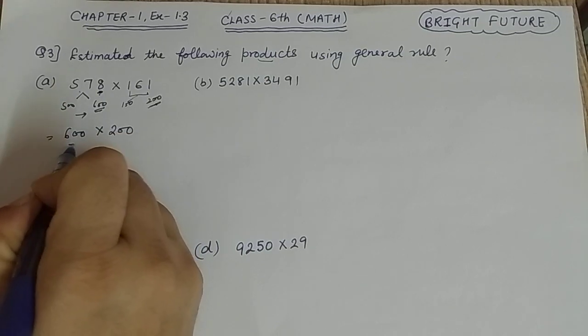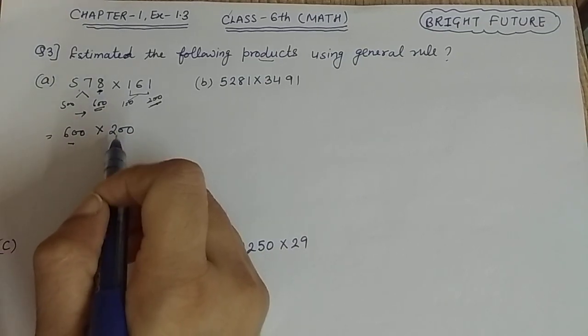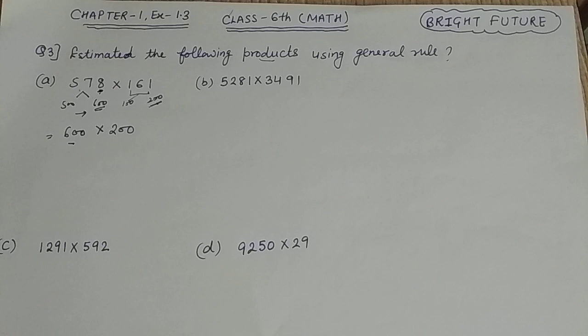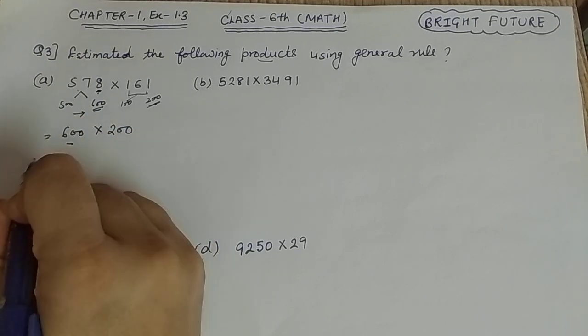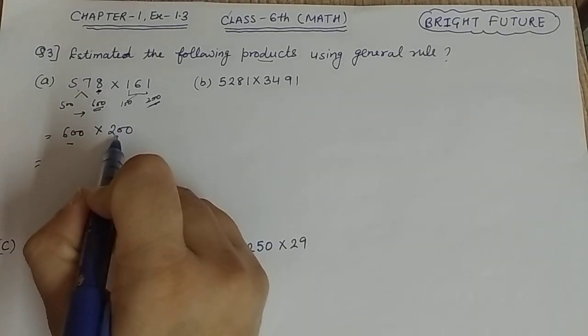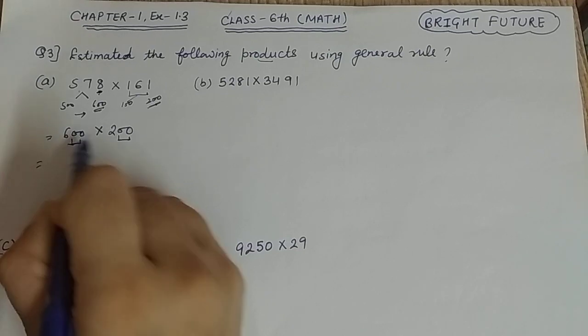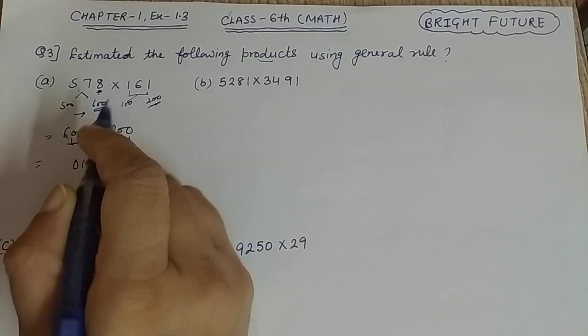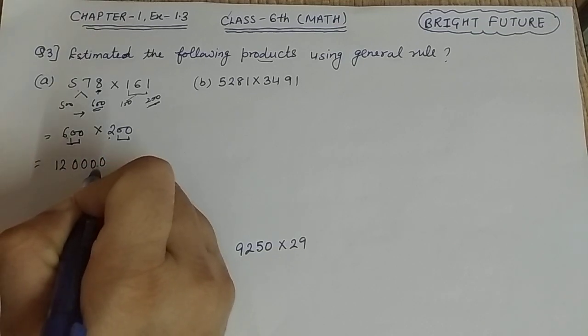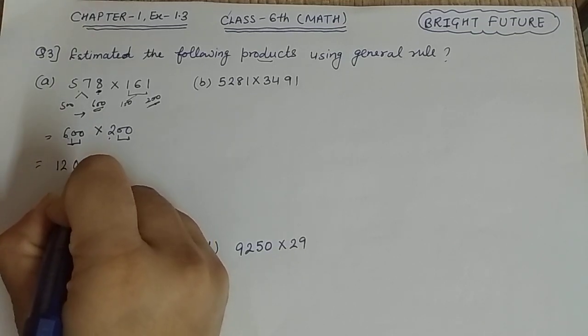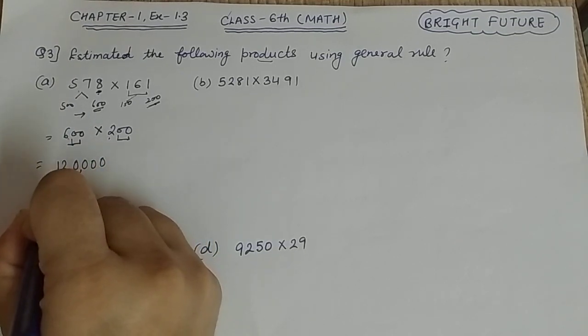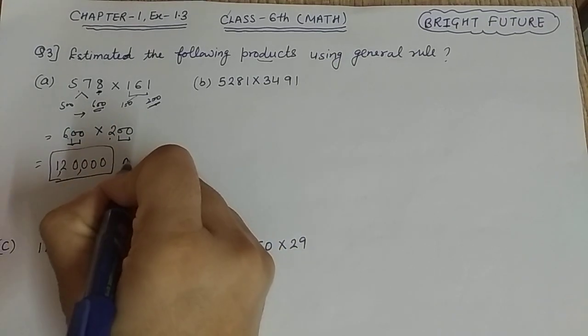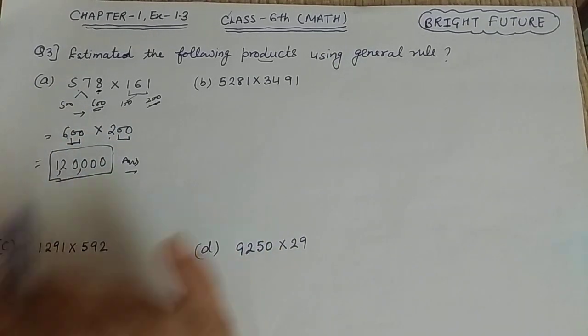Now in multiplication, we asked 600 times 200. How many zeros are here? Two and two, so four zeros will come. And 6 into 2 is 12. We put a comma here, so 1,20,000. This will be our answer for part A.